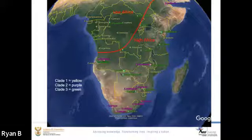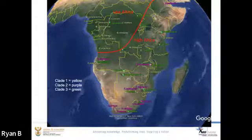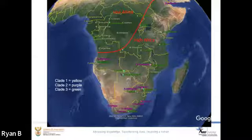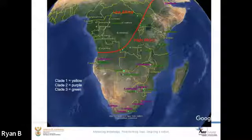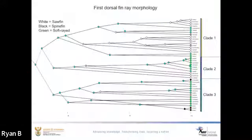Geographically, Clade one is in yellow, Clade two in purple, and Clade three in green, and there are no real geographic distinctions between the clades. Looking at the fins, the sawfin occurs in clades one and two, and the softrays in all the clades, so they do not form natural groupings either.